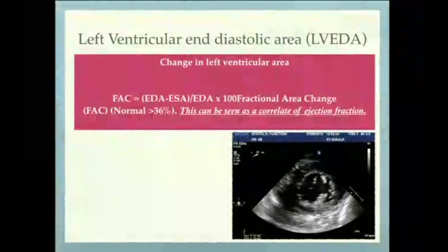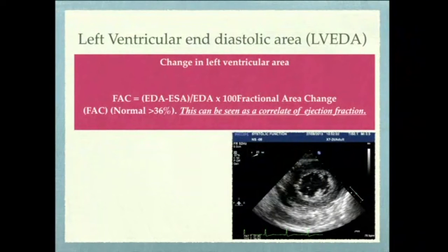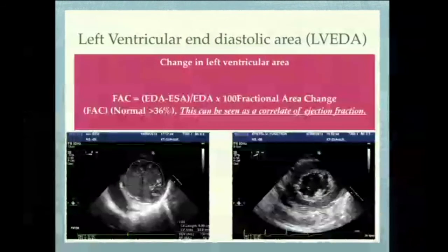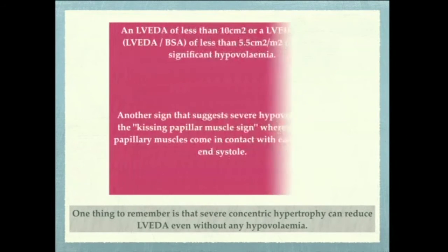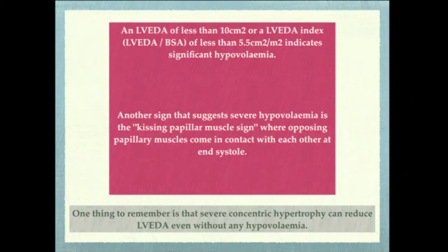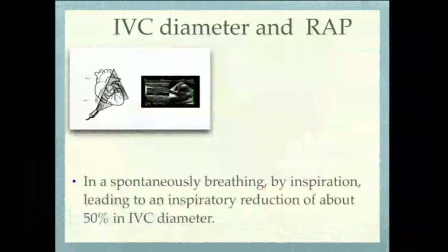Cardiac output alone doesn't tell us what is normal — there is no absolute number for adequate or inadequate cardiac output. We need to know the volume status of our patients. On echocardiography, we can easily assess volume using the left ventricular end-diastolic volume. We can see left ventricle cavity contractility — kissing papillary muscles suggest hypovolemia, while a severely distended LV short axis cavity suggests hypervolemia. However, severe concentric hypertrophy and hypertrophic cardiomyopathy are exceptions to this rule.